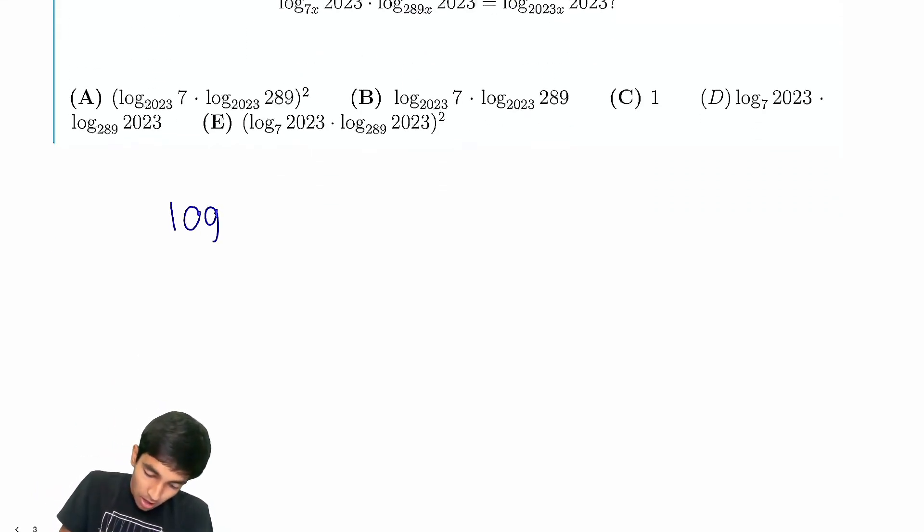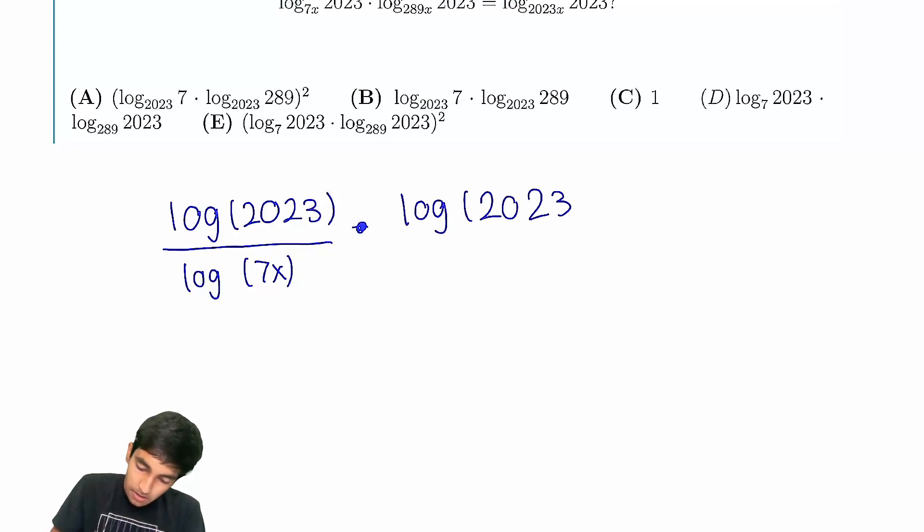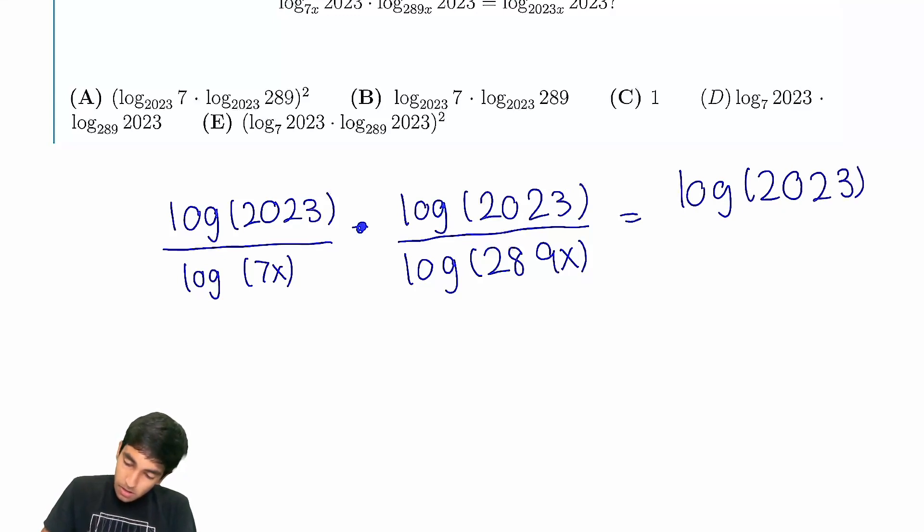What we're going to do is write log of 2023 over log of 7x, then log of 2023 over log of 289x, and this equals log of 2023 over log of 2023x. Again, we can pick whatever base we want over here. It can be anything we want.